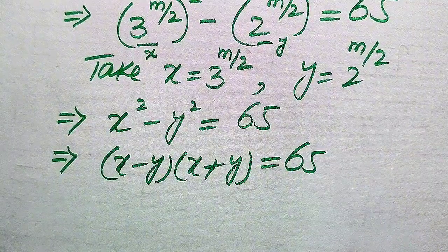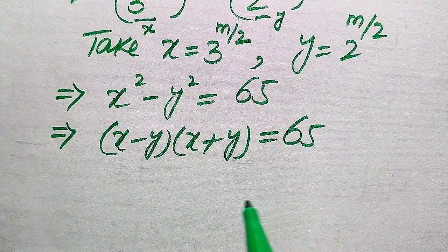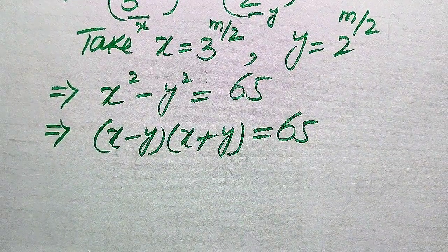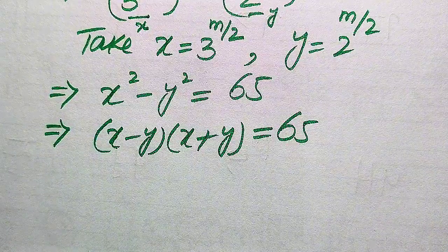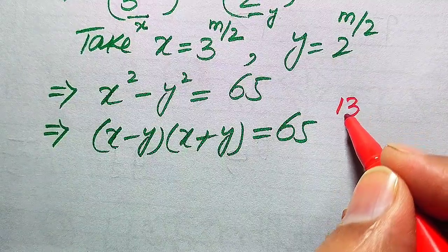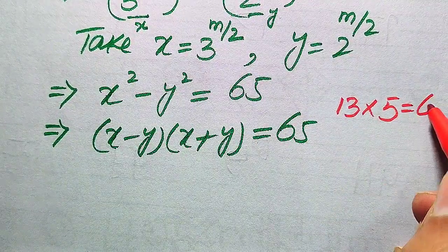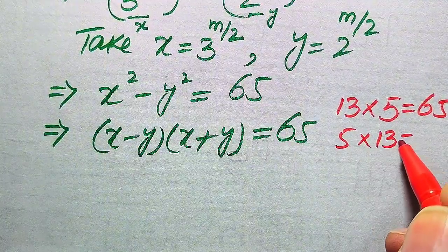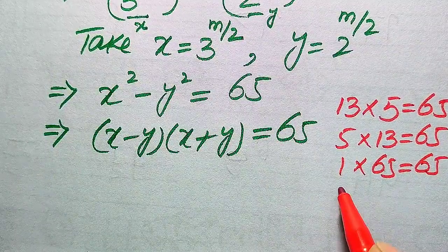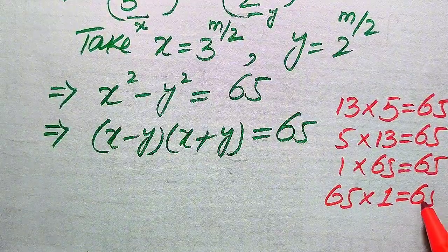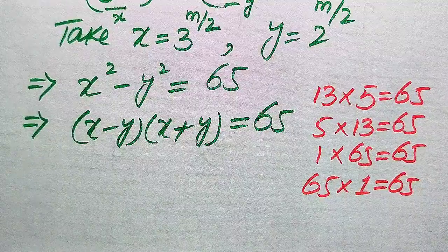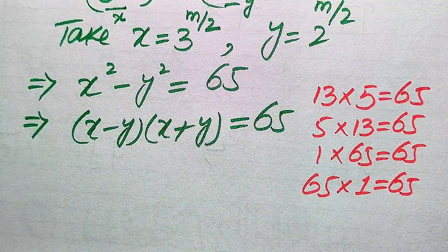We need to find pairs of positive integers whose product is 65. These are: 13 times 5 equals 65, 5 times 13 equals 65, 1 times 65 equals 65, and 65 times 1 equals 65. So there are four possibilities in which the product of two positive integers becomes 65.